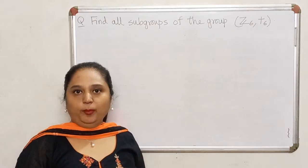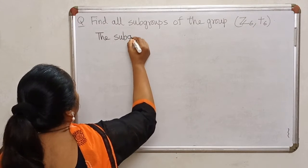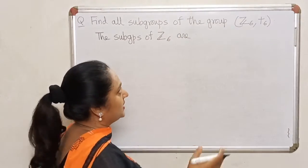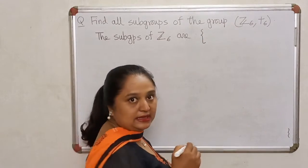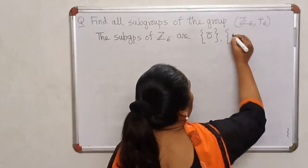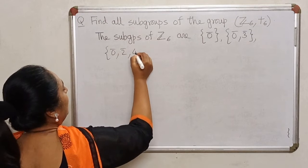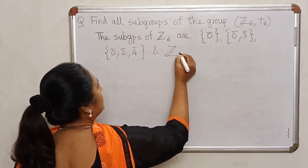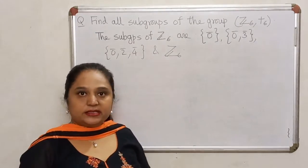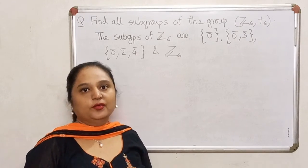Listing all subgroups of Z6 in order of increasing size: the trivial subgroup of order 1 which is {0 bar}, the subgroup of order 2 which is {0, 3}, the subgroup of order 3 which is {0, 2, 4}, and the improper subgroup of order 6 which is Z6 itself. These are all the subgroups of Z6. In the next lecture, we will look at yet another example of finding all possible subgroups of a finite group. Thank you.